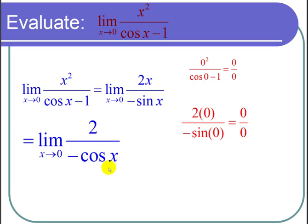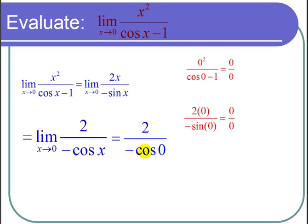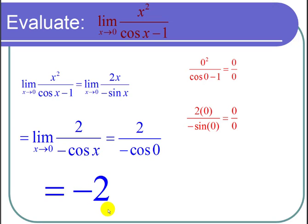Now we plug in and finally get 2 divided by negative cosine of 0, which is 2 over negative 1, or negative 2. That's our limit, and we're done with the problem.